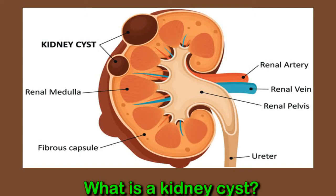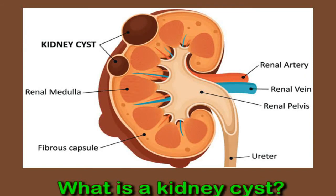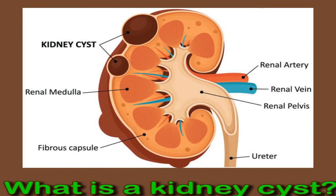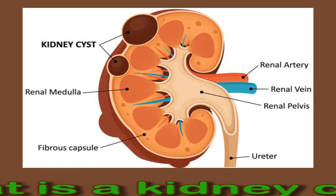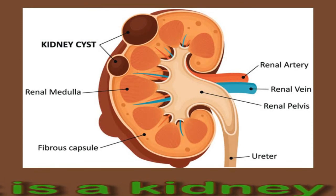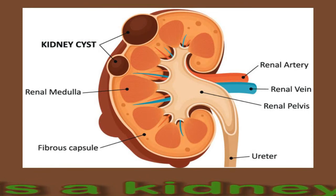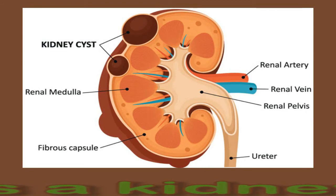Simple kidney cysts are different from the cysts that form due to polycystic kidney disease. Polycystic kidney disease is a genetic condition that may cause numerous cysts, enlarge the kidneys, and affect kidney function. In the case of acquired cystic kidney disease, the kidneys develop cysts as a result of long-term damage from kidney disease or dialysis. Acquired cystic kidney disease is not genetic but happens as a result of other kidney problems.